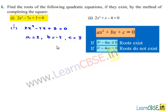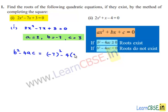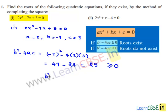So let us find the discriminant b² minus 4ac. b² minus 4ac is equal to (minus 7)² minus 4 times 2 times 3, which is equal to 49 minus 24, giving us 25, which is greater than or equal to 0. Since b² minus 4ac is greater than 0, we say that roots exist.